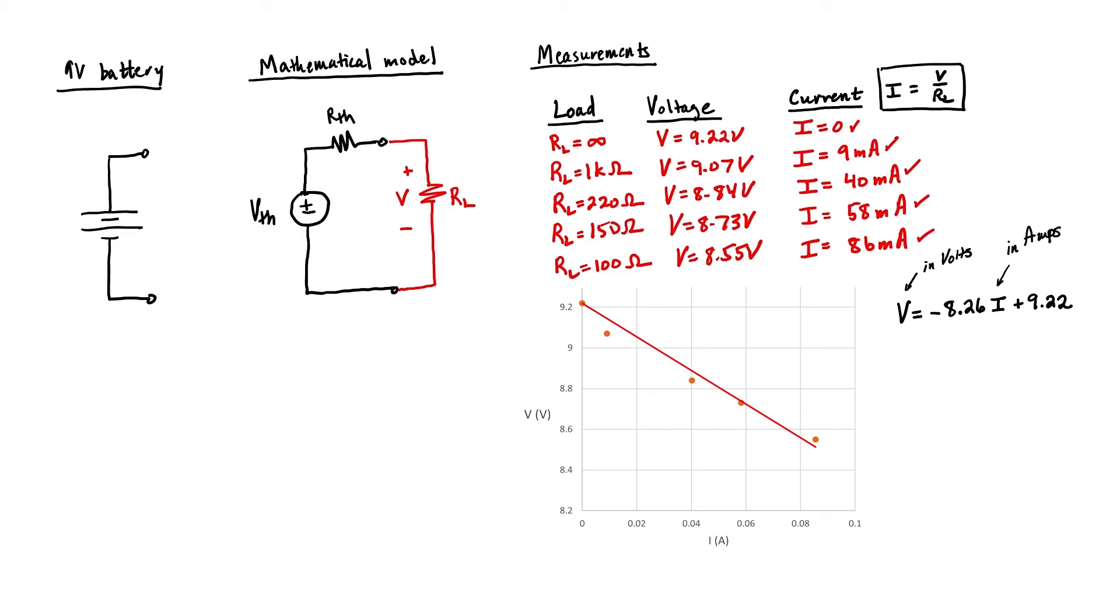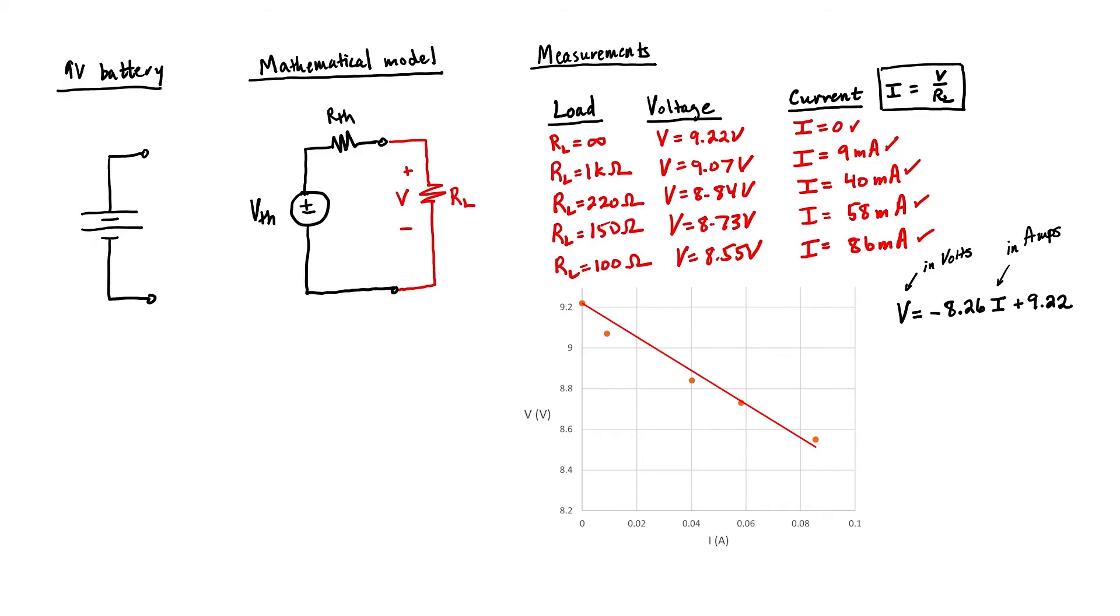You can verify that if we plug a current of zero in this equation, we'll wind up with an open circuit voltage of 9.22 volts. Let's return to our mathematical model and let me label the current. We now have a relationship between the two voltages in the diagram and the current. We wind up with V equals minus the Thevenin equivalent resistance times I plus the Thevenin equivalent voltage.